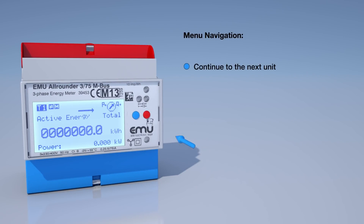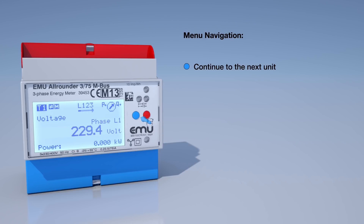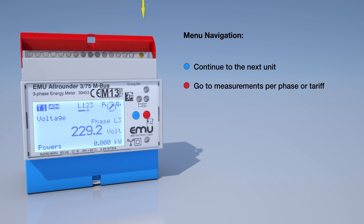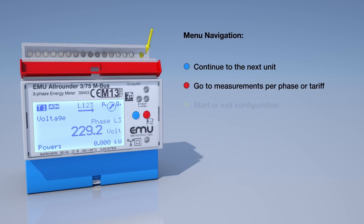Use the blue button to switch to the next unit such as power, current, or voltage. Use the red button to access the measurements per phase or tariff. Use the service button to start or exit the configuration.